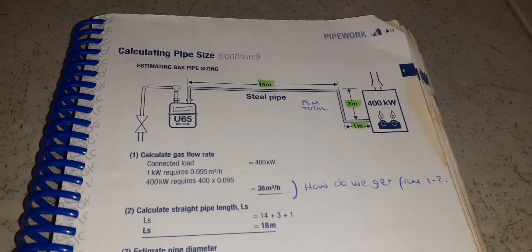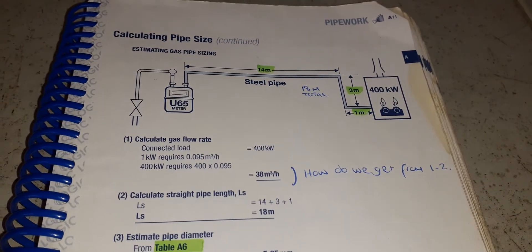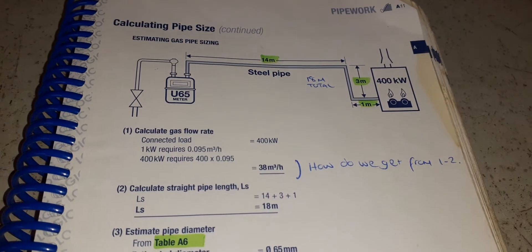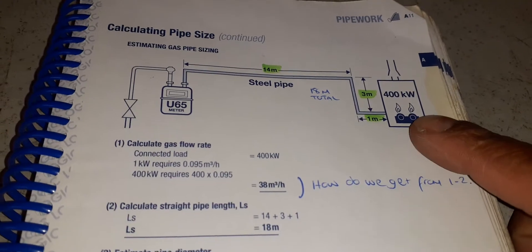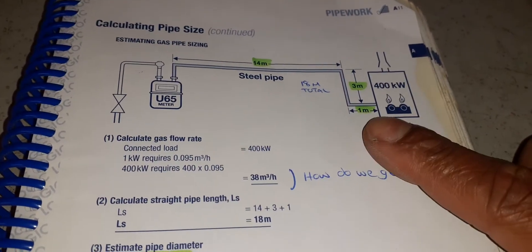Hi, welcome to the Commercial Gas Engineer channel. Just going to have a look at this book and spend a few minutes talking about calculating pipe sizing. So we have a 400 kilowatt appliance and we have to find out what size of pipe we need in order to supply the right flow rate.